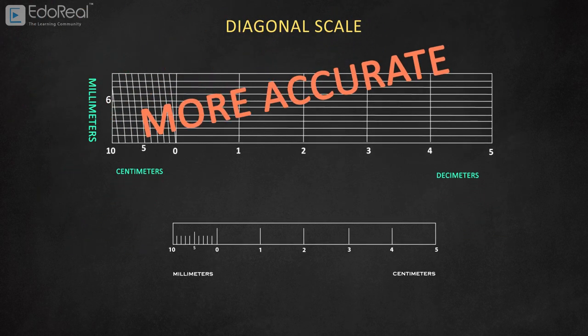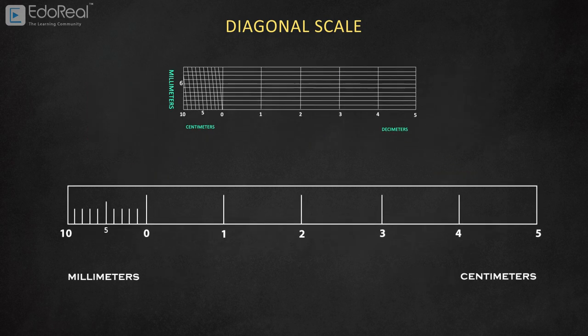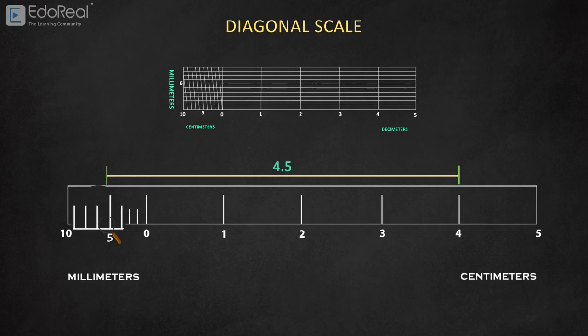Diagonal scale gives a more accurate measurement than the plane scale. For example, the plane scale can measure 4.5 units, but cannot accurately measure up to 4.56 units, as there are no further subdivisions in the plane scale.